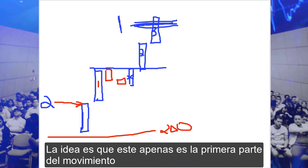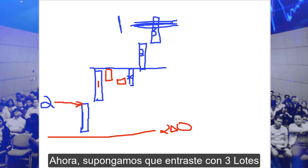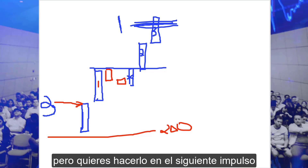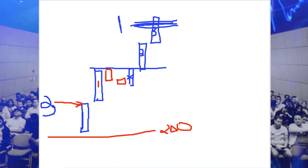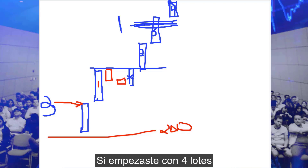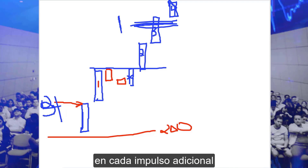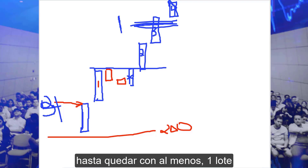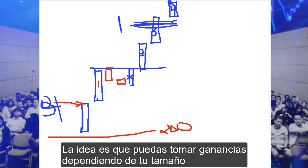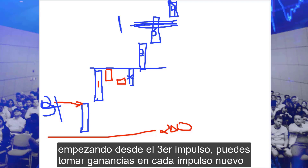The idea is that this is the first part of the move. I now give you the right to sell another, but you'd want to try to do that on another push — push four, if you could get it. If you had four lots, you could just keep selling every single additional push, all the way down to your one lot at least. So you can take profits depending on your size, starting from the third push on every push after the third one as well.